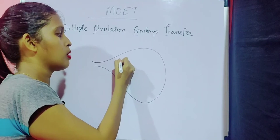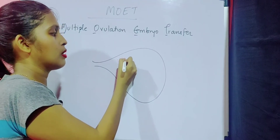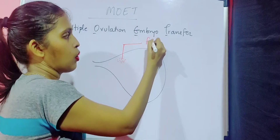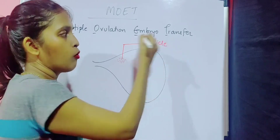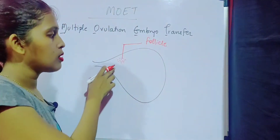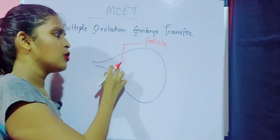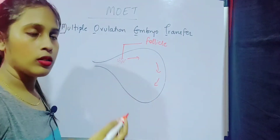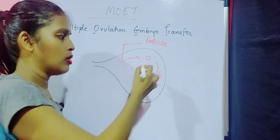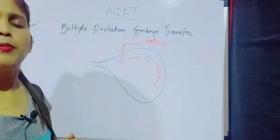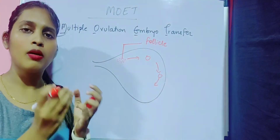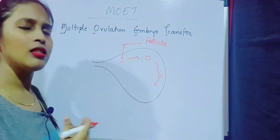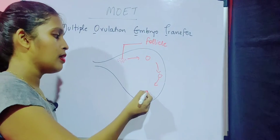The egg is produced with the help of small particles called follicles. These follicles undergo a lot of mitosis, a lot of cell division, and different follicles form, then an oocyte forms, then a secondary oocyte forms, and this process goes on.